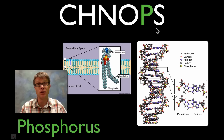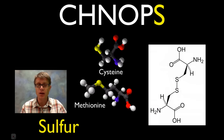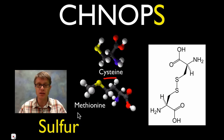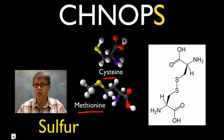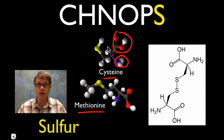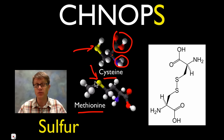One of the hardest ones here is sulfur — why do we need sulfur? Well if you look right here I've got two amino acids: this is cysteine and methionine. Again it's going to have its carboxyl group, its amino group, its carbon and its hydrogen. But you can see in both of these amino acids we're going to have sulfur.